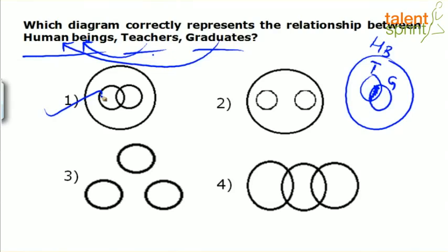Don't go by quotations like 'experience is the best teacher' — experience is not a human being, and nature is not a human being either. Keep it simple and establish the relationship directly. Also, a teacher need not be a graduate, and all graduates need not be teachers — some graduates go for other professions. So the best diagram showing the relationship among human beings, teachers and graduates is option 1, where both teachers and graduates are overlapping subsets inside human beings.